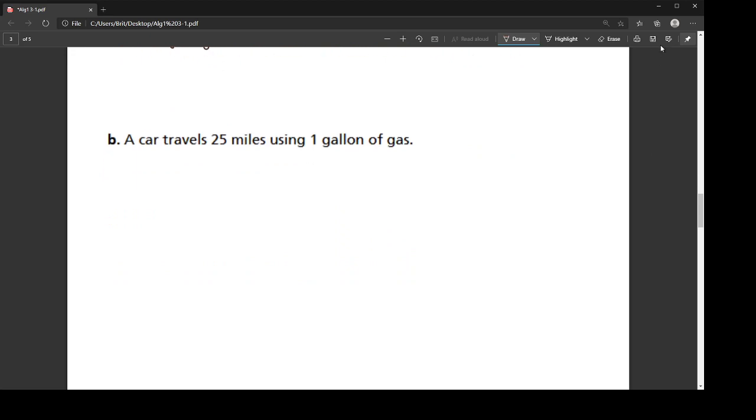And then our last example is talking about a car traveling. And it's only going 25 miles, and it's only using one gallon of gas. So my domain is my set of x values. Now, the amount of gas that we have is what is determining how far the car can travel. So my domain is describing the amount of gas that I have. Well, I can use none of that gas, or I can use all of that one gallon of gas. So my domain is the set of all x values where x is greater than or equal to zero, and x is less than or equal to one.